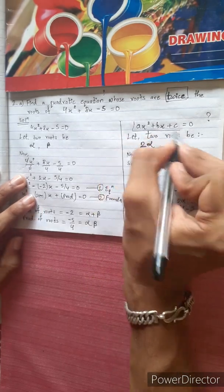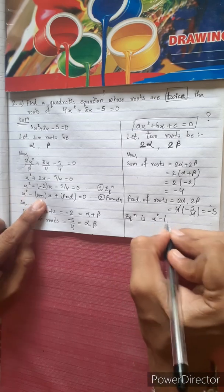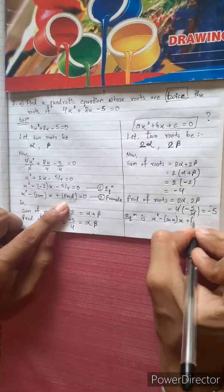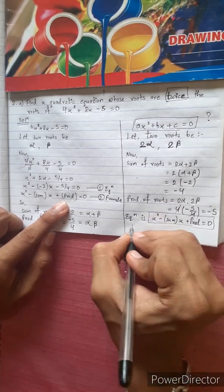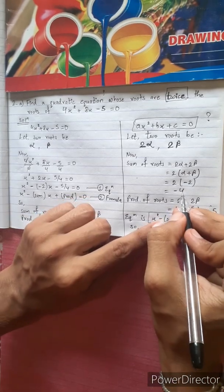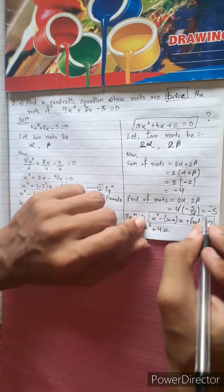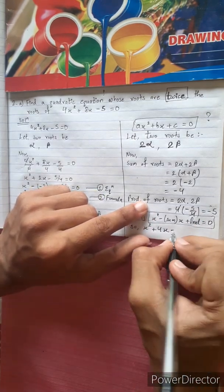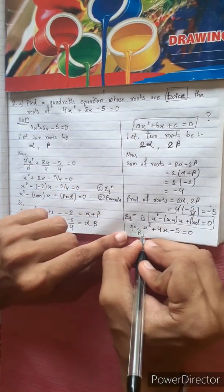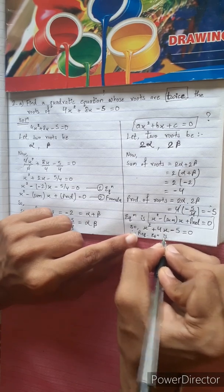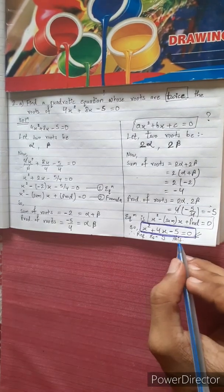Now the required equation using the formula: x² minus (sum of roots)x plus product of roots equal to 0. So x² minus (minus 4)x plus (minus 5) equals 0, giving x² plus 4x minus 5 equal to 0. This is the required equation.